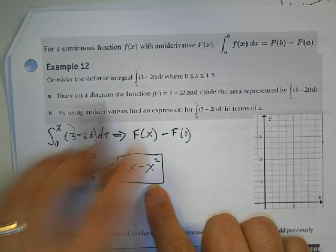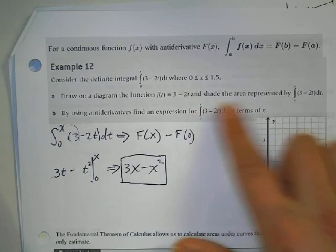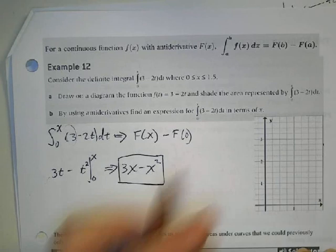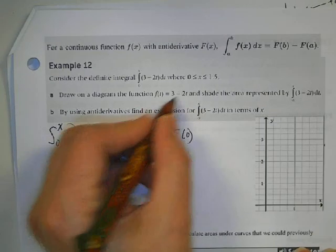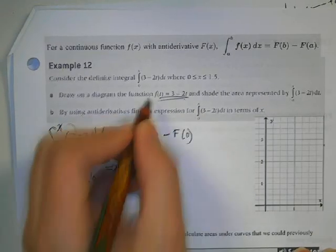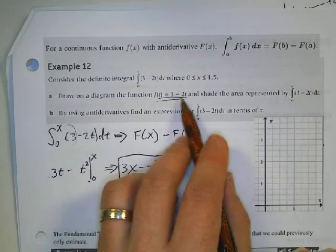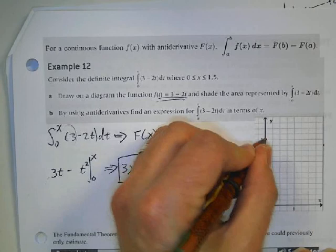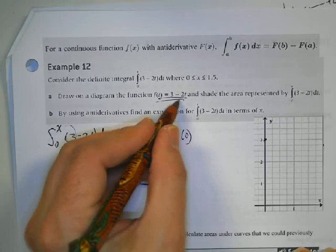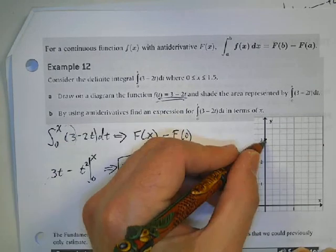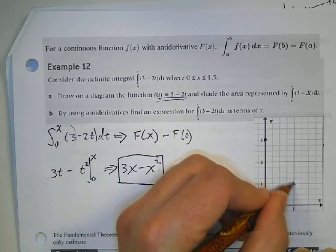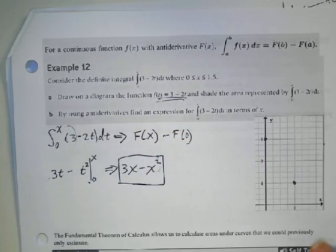Draw the diagram and shade it. We know that our function 3 minus 2t starts at 3. The slope is negative 2, so we go over 1 and down 2, and then draw the line.